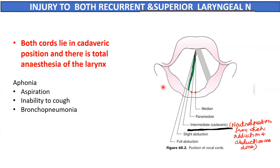Since both nerves are involved, both abductors and adductors are affected and the vocal cords are in the cadaveric position. Additionally, there is anesthesia of the larynx, leading to dysphonia, aspiration, inability to cough, and bronchopneumonia. Tracheostomy must be performed in these patients as well.